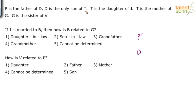D is the only son of T. Focus on the word 'only' here — D is the only son. So D is a son first of all. It said P is the father of D, and at that point we did not know the gender of D.